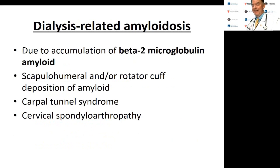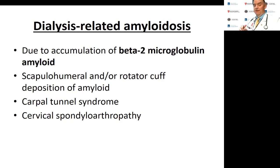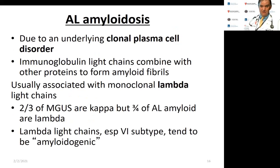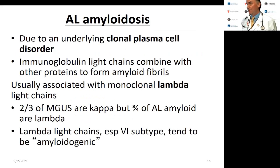There is also dialysis-associated amyloid due to beta-2 microglobulin combining with other proteins. This amyloid tends to accumulate in musculoskeletal areas — particularly the scapulohumeral region, rotator cuff, carpal tunnel, and neck. We'll focus the rest of the discussion on AL amyloid, which is the most common type and what you should know about.